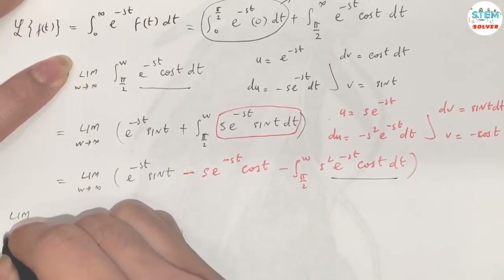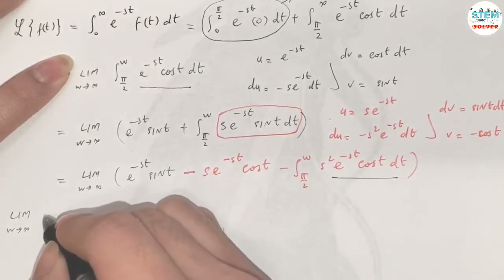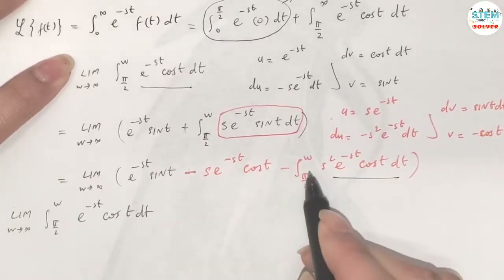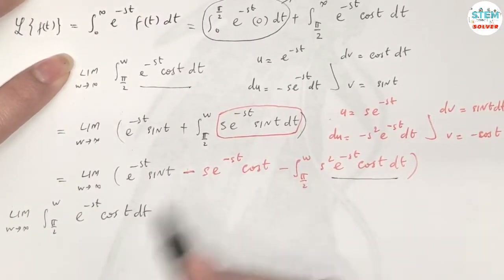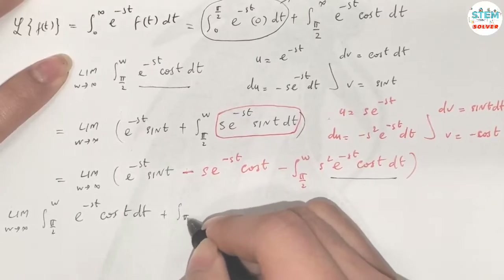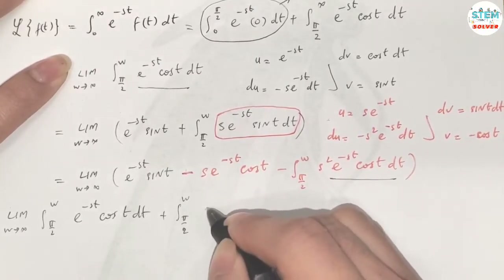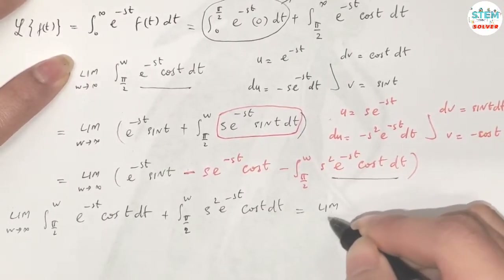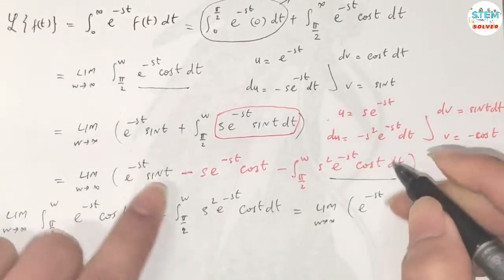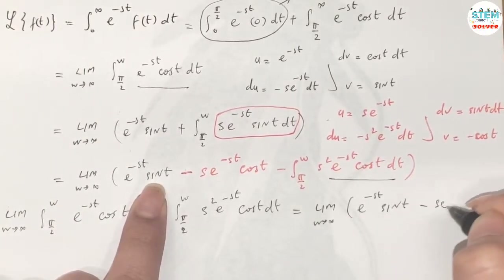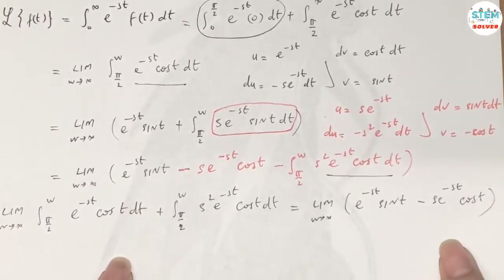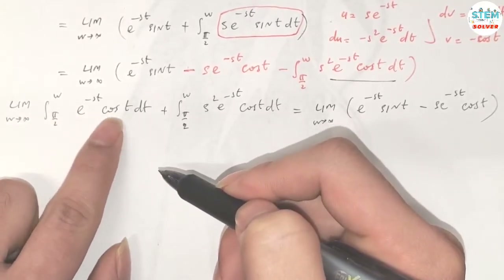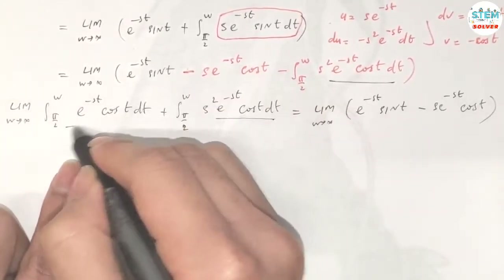So we write: the limit as w goes to infinity of the integral from π/2 to w of e^(-st) cos(t) dt, plus s² times that same integral, equals the limit as w goes to infinity of e^(-st) times [sin(t) minus s cos(t)]. The shared integral factor is pulled out of the limit since (1 + s²) is treated as a constant.